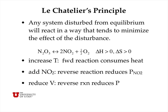Now let's look at Le Chatelier's principle: any system disturbed from equilibrium will react in a way that tends to minimize the effects of that disturbance. Take the reaction of N2O5 to produce NO2 and half a mole of O2. This reaction is endothermic, so delta H is greater than zero, and delta S is greater than zero as well — we can tell by inspection because there are two and a half moles of gas on the product side and only one on the reactant side. If we increase the temperature, the forward reaction is endothermic and consumes heat, so we can think of heat as a pseudo-reactant.